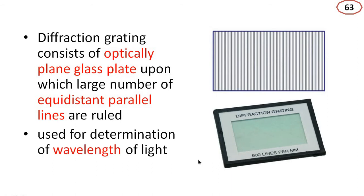It is used for the determination of wavelength of light. This grating is equivalent to a large number of slits — instead of 2 slits, here we have a large number of slits.